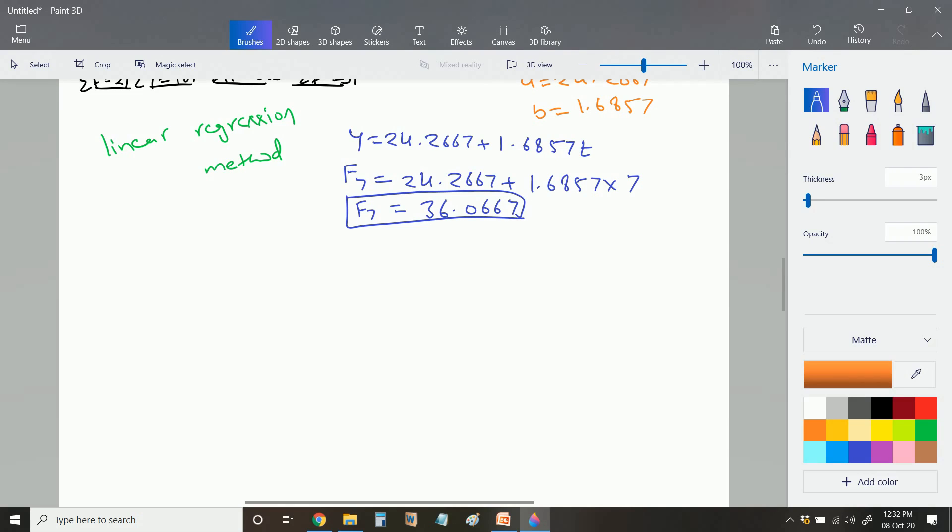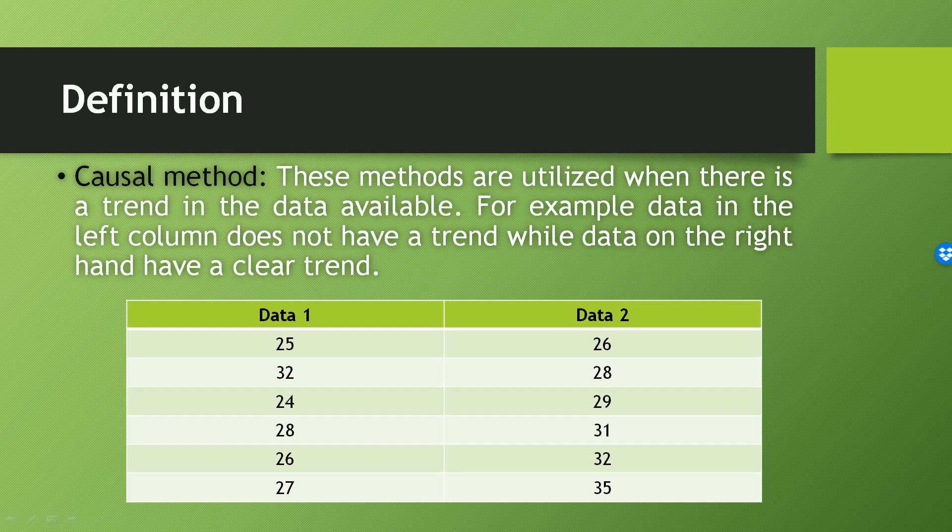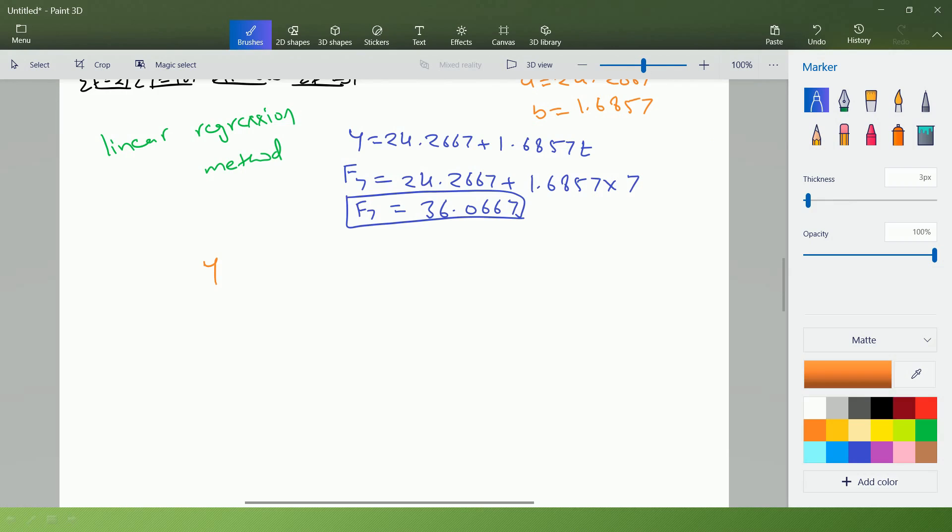Now if you apply this method to the data which does not have any trend, this data is also known as constant data, which is 25, 32, 24, 28, 26, and 27. As this data does not have any trend, we can write it as y equal to c. So in that case, we have to find out the error which will be y minus c square. So if I find out this method, this will come equal to sigma y over n, which is average. So you can say, if I apply linear regression method to the constant data, that would be equal to the simple average method.